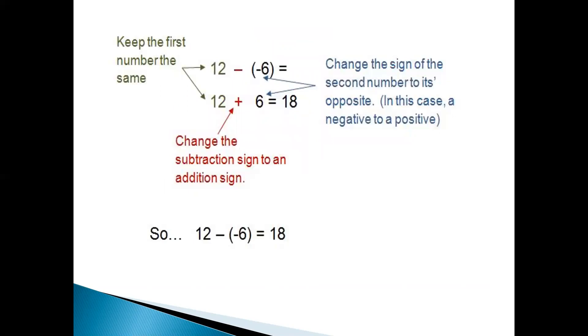For example, we have 12 minus within the bracket minus 6. Open the bracket using the rules: minus minus plus, as we have learned earlier, two negative signs positive. 12 plus 6, 18. Change the subtraction sign to an addition sign. Now the answer will be plus 18 because the sign of the bigger number is positive.